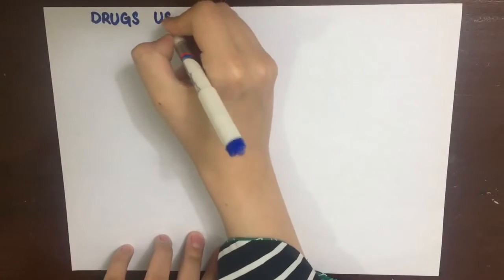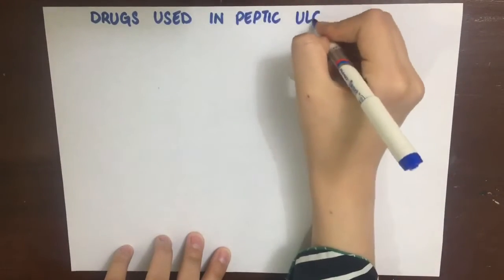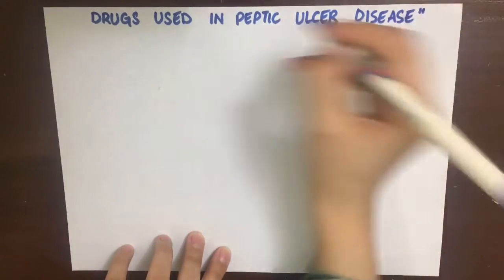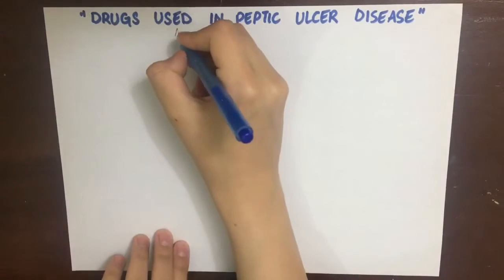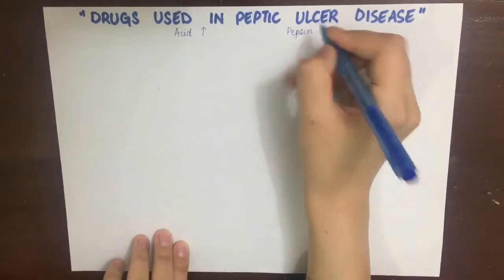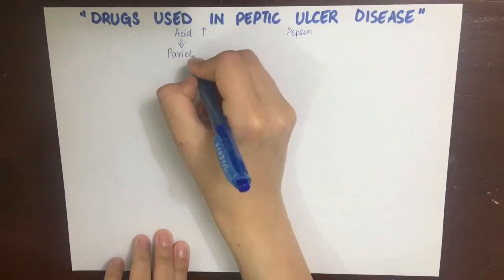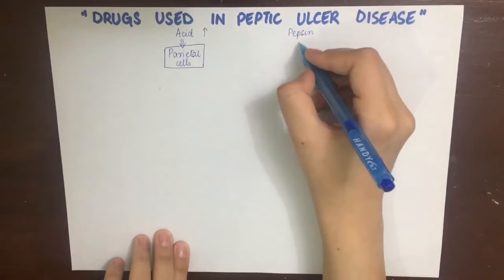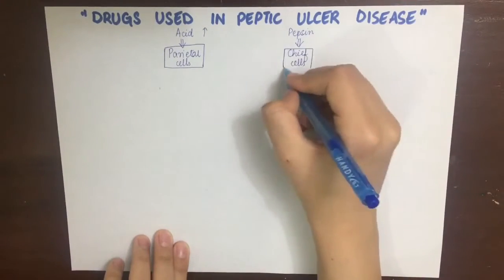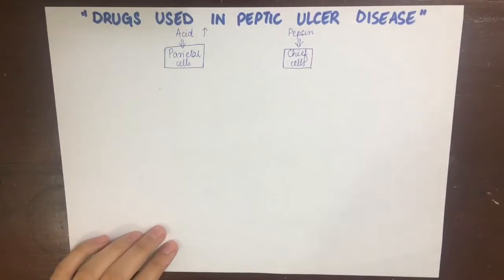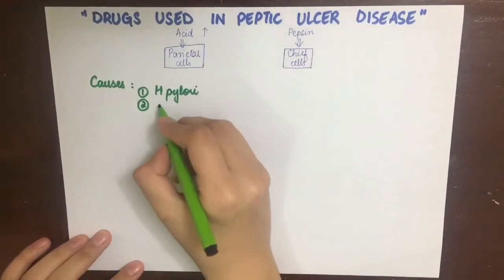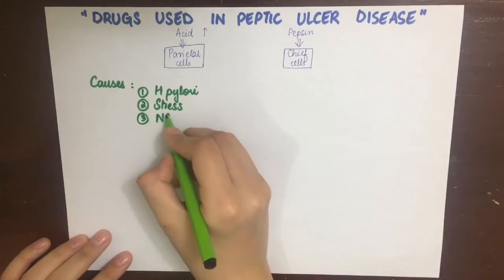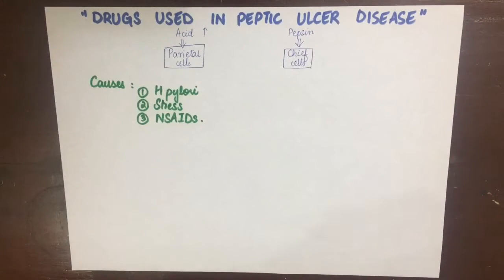Drugs used in peptic ulcer disease. Peptic ulcer is a lesion of the gastrointestinal tract, typically the stomach and duodenum, caused by damage to the mucosa and deeper tissues due to acid and pepsin. The acid is secreted by the parietal cells and the pepsin is secreted by the chief cells. The causes of peptic ulcer include three major things: first, H. pylori infection; secondly, stress in chronic disease patients; and thirdly, NSAIDs.